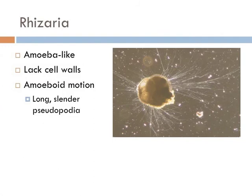The rhizaria are a species-rich supergroup of unicellular eukaryotes. They vary considerably in form, but for the most part they are amoeboid with phyllose, reticulose, or microtubule-supported pseudopods — in other words, pseudopods that are basically hair-like structures, as you can see in this picture. They are also known to lack cell walls and move by amoeboid motion with these long, slender pseudopodia.